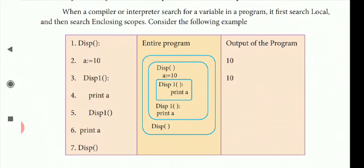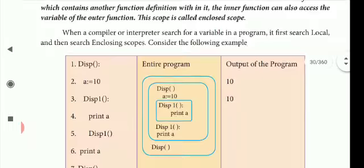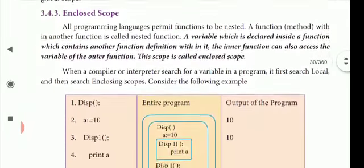So we search for the variable and print it. Outside of the display function, when we call it, we send the result. So our output is 10 printed two times. This is our enclosed scope.